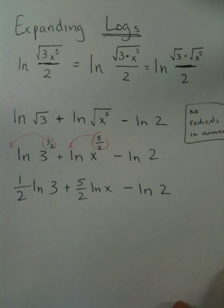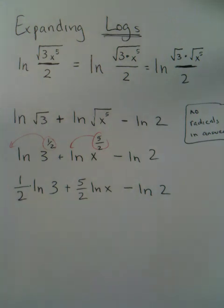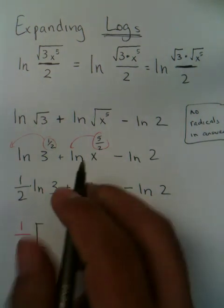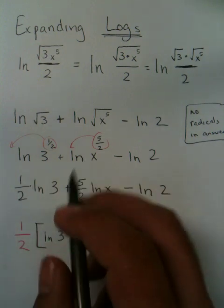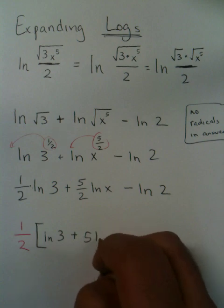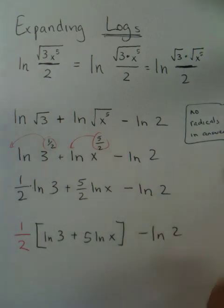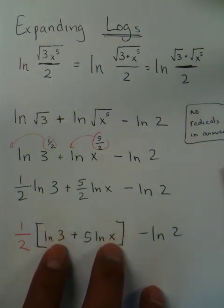Now depending on some teachers, some teachers are going to ask you to factor out the fraction. What they'll do is they'll just say pull out the one half. This one half specifically will then be multiplied by this natural log of three, and then it'll be multiplied by five natural log of x.